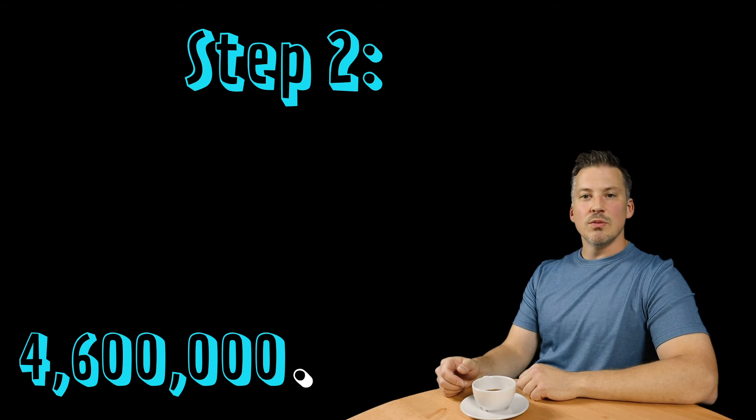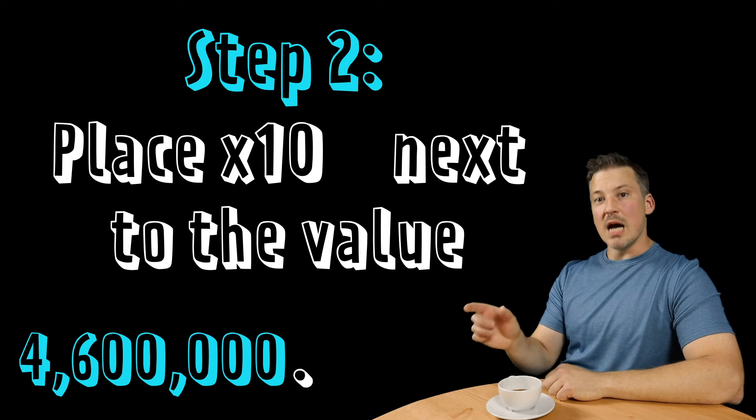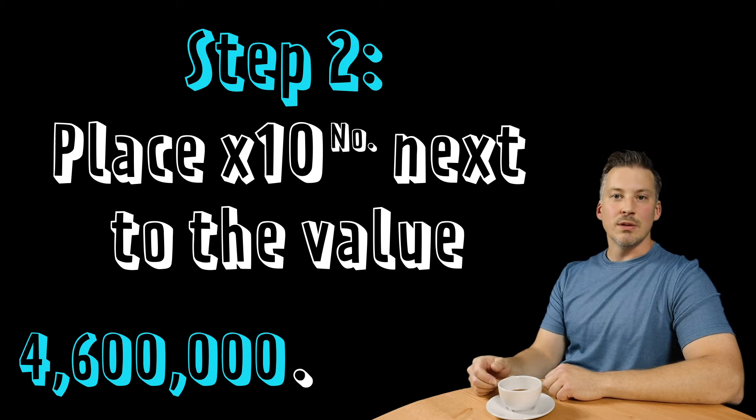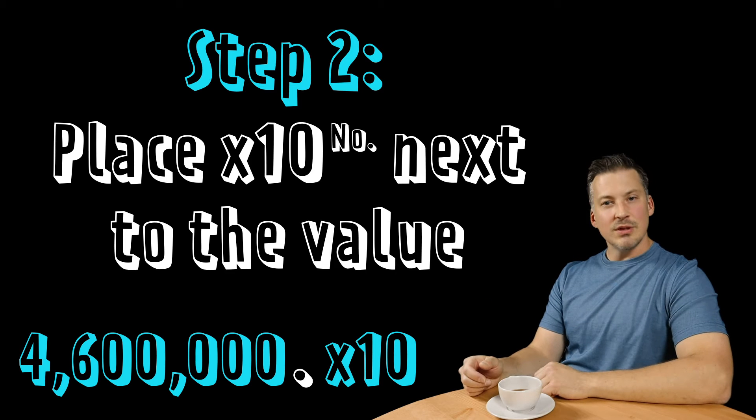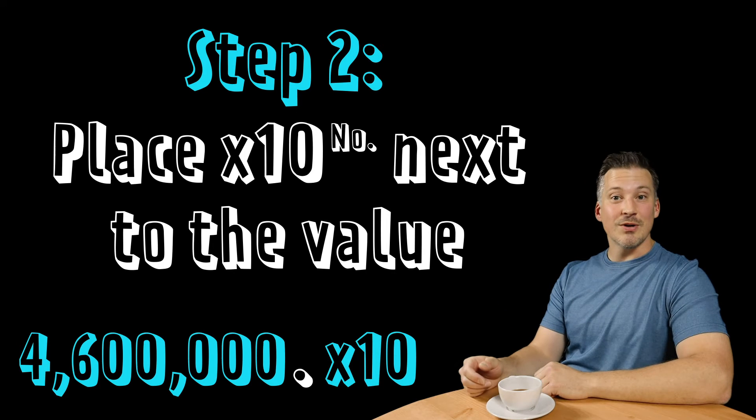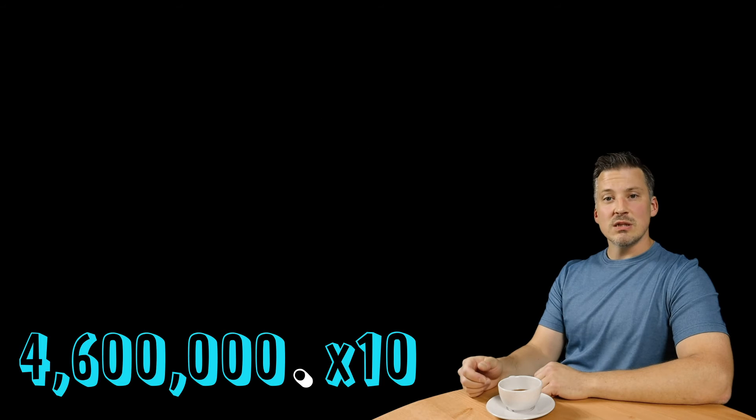The next step, step two, will be to place times 10 raised to a number at the end of the value. Now, if that's already there, all you need to do is simply skip to the next part, step three. And what is step three?